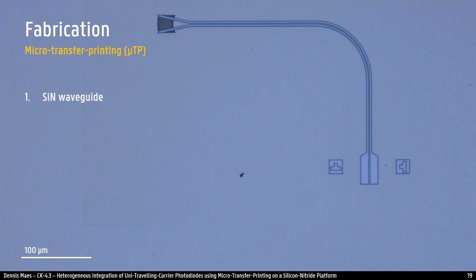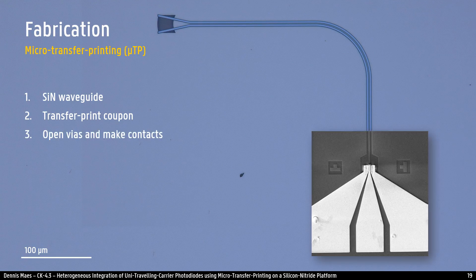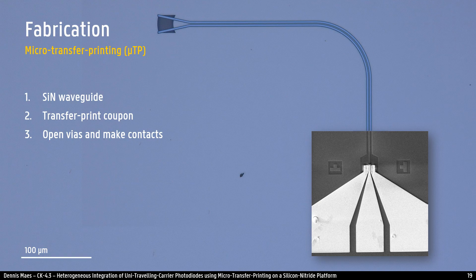As a quick recap, a silicon nitride circuit with no top cladding is first made. A photodiode is printed on top of it, and the post processing is done to make electrical contacts.